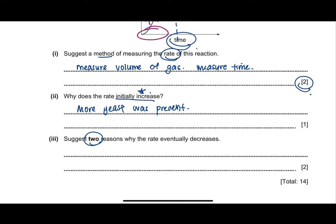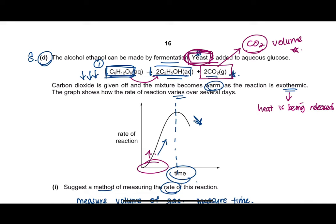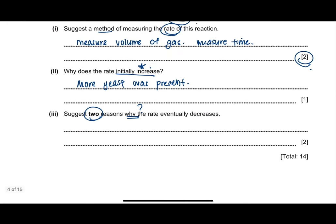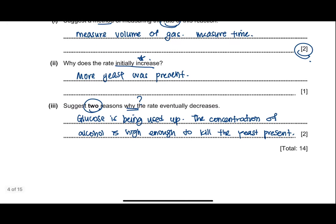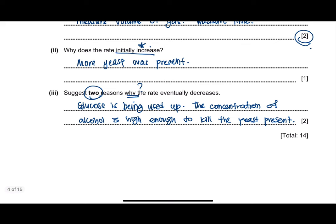The question also asks for two reasons why the rate eventually decreases. First, glucose is constantly being converted into alcohol, so it is being used up. Second, alcohol has the tendency to kill the yeast present in the fermentation process. Therefore: the glucose concentration decreases as it is used up, and the increasing concentration of alcohol is high enough to kill the yeast present.